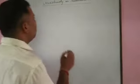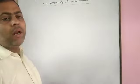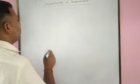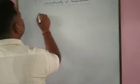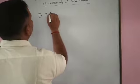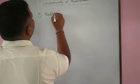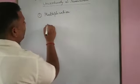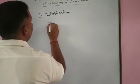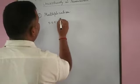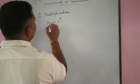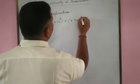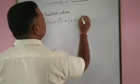We will discuss multiplication and division by carrying out scientific notation. For multiplication, if we have the number 5.6 into 10 to the power 5, multiplied by 6.9 into 10 to the power 8.